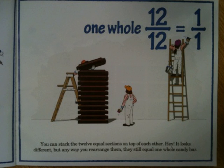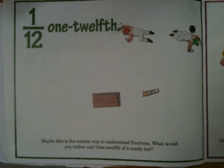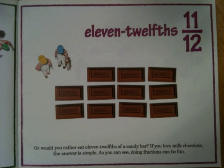You can stack the twelve equal sections on top of each other. It looks different, but any way you rearrange them, they still equal one whole candy bar. One twelfth. Maybe this is the easiest way to understand fractions. What would you rather eat — one twelfth of a candy bar, or eleven twelfths of a candy bar? If you love milk chocolate, the answer is simple. As you can see, doing fractions can be fun.